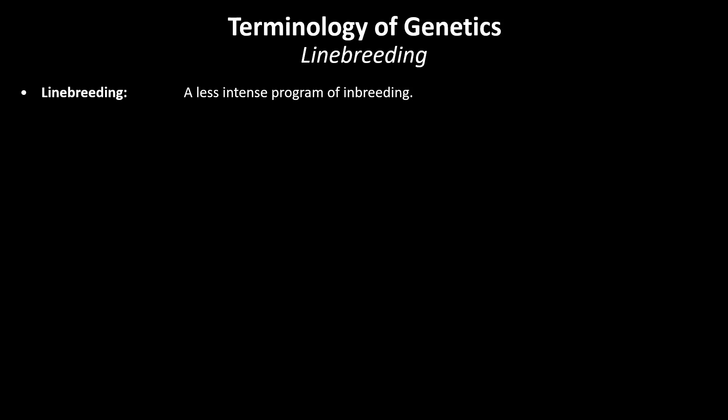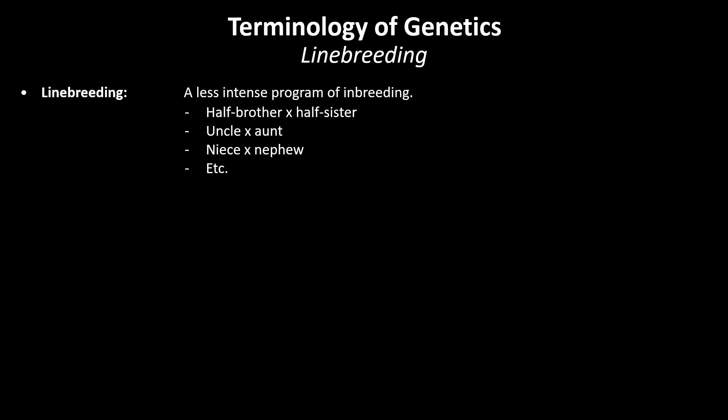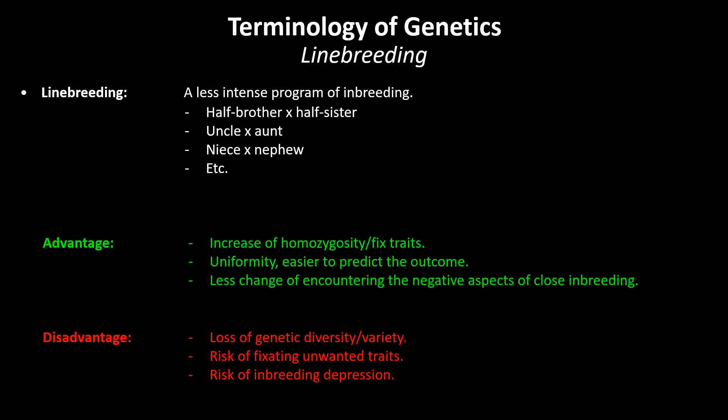Line breeding is a less intense form of inbreeding. Although the relation between the animals which are crossed is less close, they often have a common ancestor. Examples are crosses between half-siblings, uncle to niece, aunt to nephew, etc. Similar to close inbreeding, the advantage of line breeding is that it will increase homozygosity, leading to more uniform offspring. Another advantage of line breeding is that there is less risk of encountering the negative aspects associated with close inbreeding, although the risk cannot be entirely neglected.